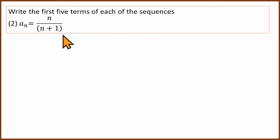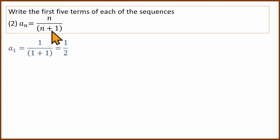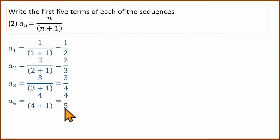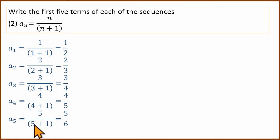This is the first question done. The second question is aₙ = n divided by (n + 1). The numerator is n and denominator is n+1. So the first term is 1/2, second is 2/3, third is 3/4, fourth is 4/5, and fifth is 5/6. So a₅ = 5 divided by (5+1) = 5/6.